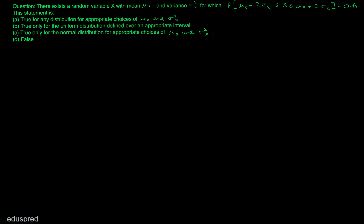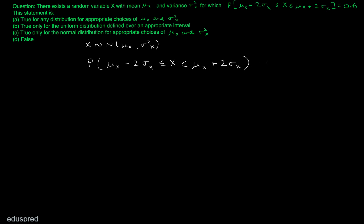Now, this statement cannot be true. The reason being: if X follows a normal distribution with mean μx and variance σ²x, then as per the characteristic of a normal distribution, the probability that X lies between μ minus 2σ and μ plus 2σ is equal to 0.954.